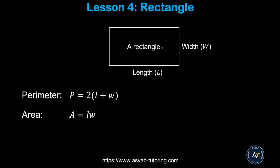A rectangle is a four-sided shape where opposite sides are the same. The perimeter formula is 2 times (length + width), and the area equals length times width.